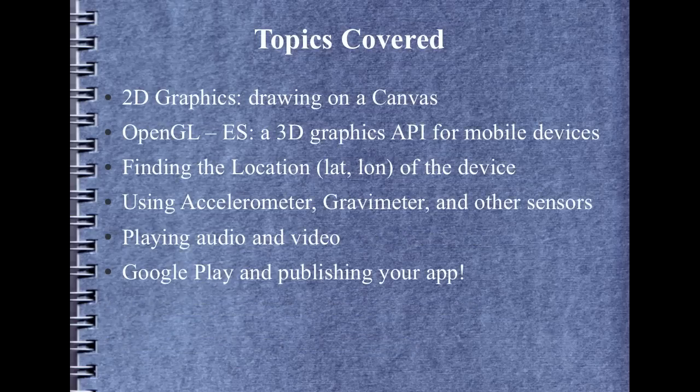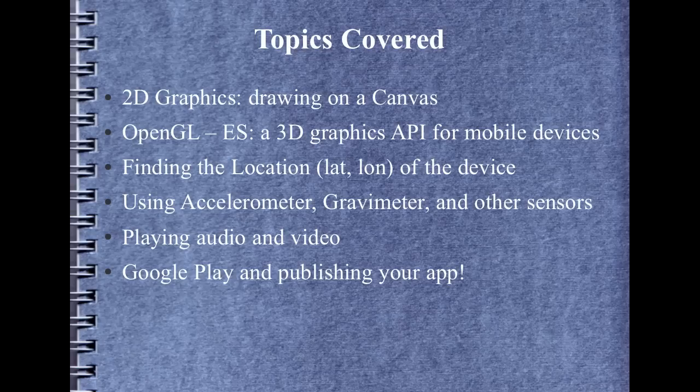We'll talk about 2D graphics, which is drawing on a canvas — usually drawing on a bitmap within a canvas — and how to present 2D graphics and use them in our activities. And then we'll give a short introduction to OpenGL ES. OpenGL ES 1.1 and 2.0 are really an entire course all to themselves, but OpenGL ES is a 3D graphics API for mobile devices put out by the Khronos Group. We'll talk about how to look up information pertaining to development with OpenGL ES and give you a good development template to start developing in OpenGL.